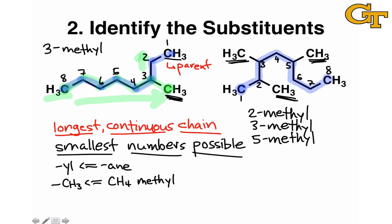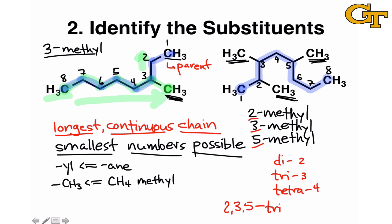Having to write 2-methyl, 3-methyl, and 5-methyl all within the name would get unwieldy. This is the motivation for the IUPAC convention of using di-, tri-, and tetra- prefixes to indicate multiple copies of the same substituent — it saves characters. The prefix must include all positional information: list the numbers from smallest to largest, then use di-, tri-, or tetra- to indicate the count (2, 3, or 4 copies), followed by the substituent name. Here we have three, so this is '2,3,5-trimethyl' — one succinct prefix encoding all three methyl groups.